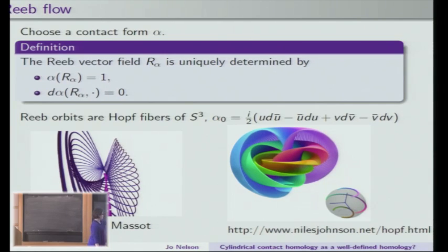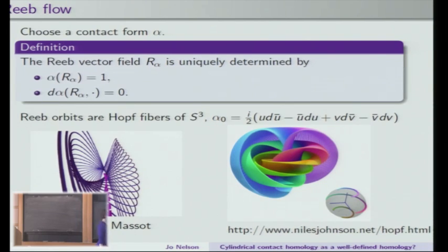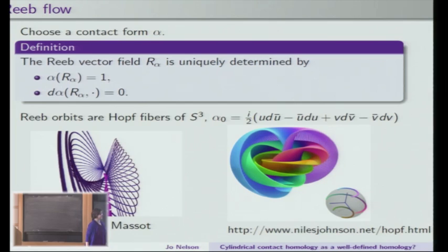Some people have made very nice illustrations of what's going on. This is a picture of Patrick Mousseau — the purple lines are supposed to be the Reeb orbits, and the fuchsia planes represent pieces of the contact structure. Niles Johnson also made some beautiful interactive visualizations of the Hopf fibration, so if you're bored for the rest of the talk you can go to his website and play around with them. The blue-to-purple coloring sketches out the Reeb orbits; you can see some complicated nested dynamics going on. We'll revisit the Hopf fibration later to look at a nice perturbation of it.